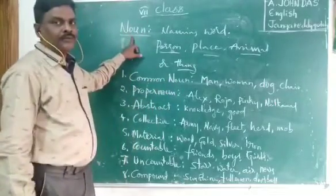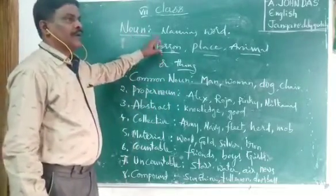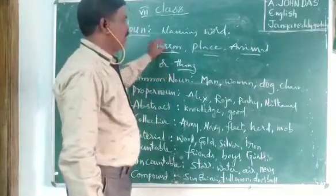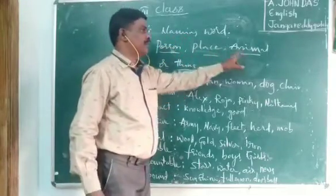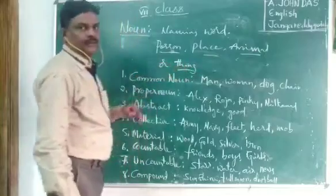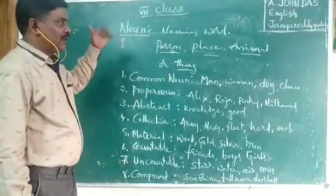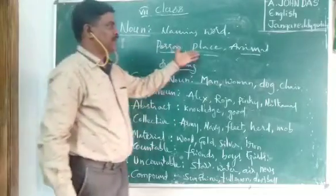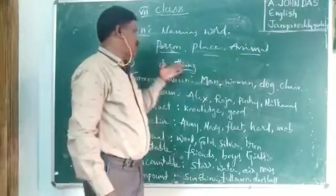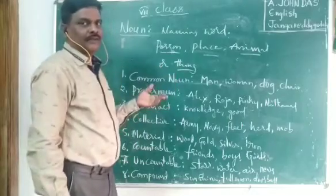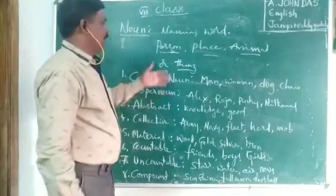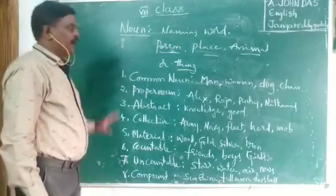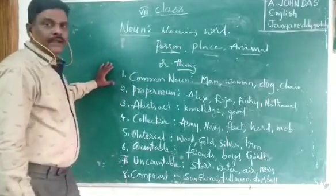Now we say naming word, which is used for a person, animal, or thing. As I told in the past lesson, a person — like Alex — animal, or thing — like chair, chalk, etc. These are all nouns. Nouns are of eight kinds.